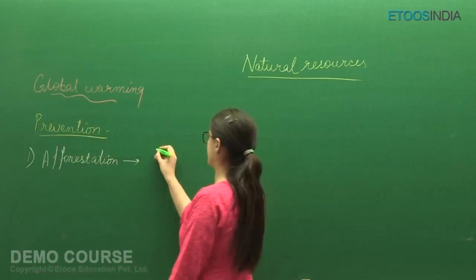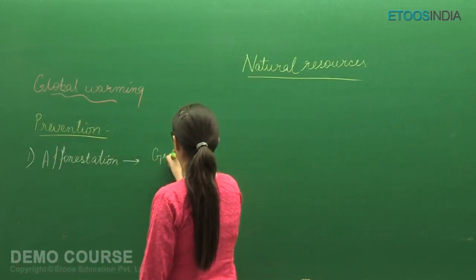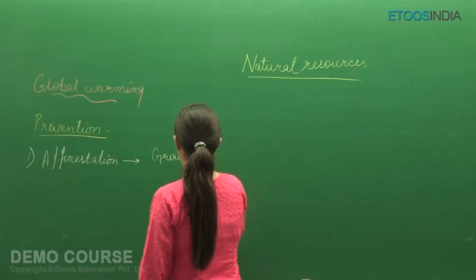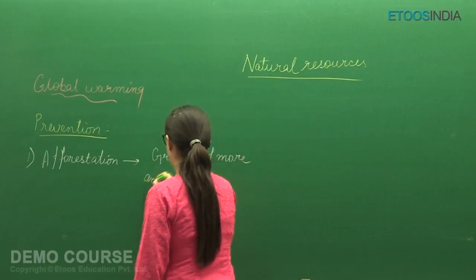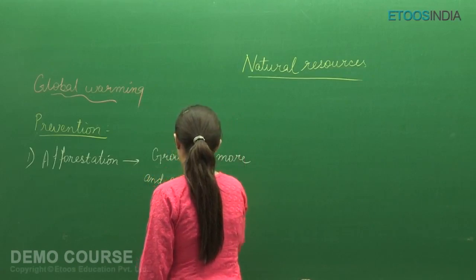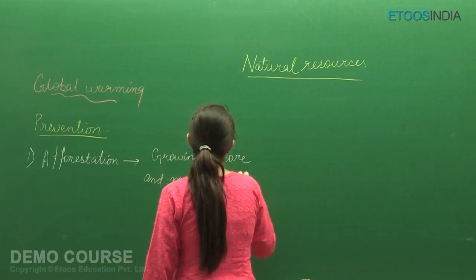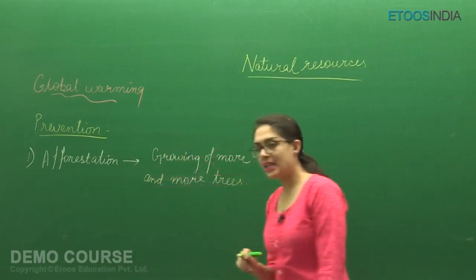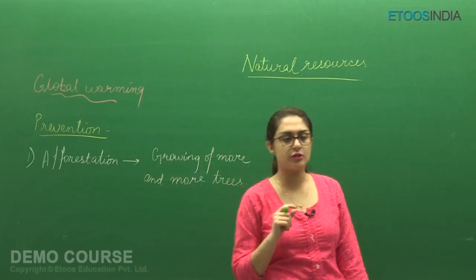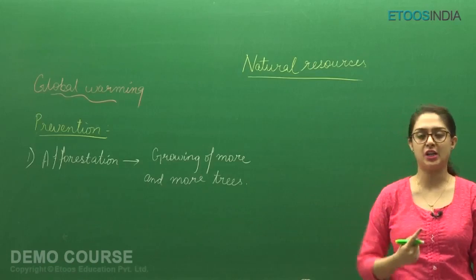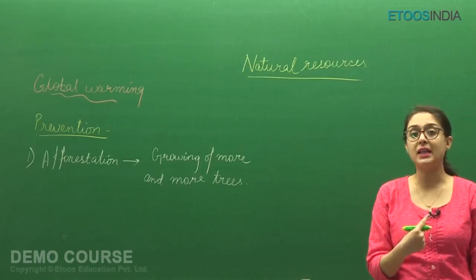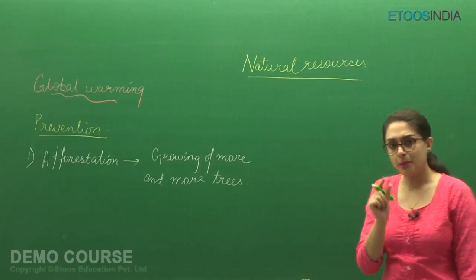So whatever the carbon dioxide releases from any kind of natural source, human source, or by the biological activity respiration, that CO2 gets absorbed by the plants. The green plants, especially, the green plants utilize this CO2, fix this CO2.